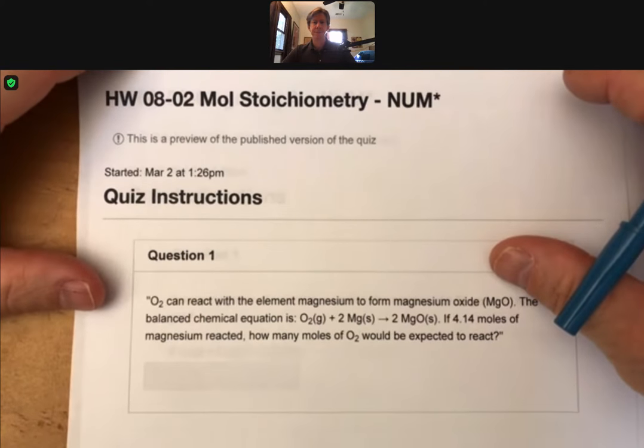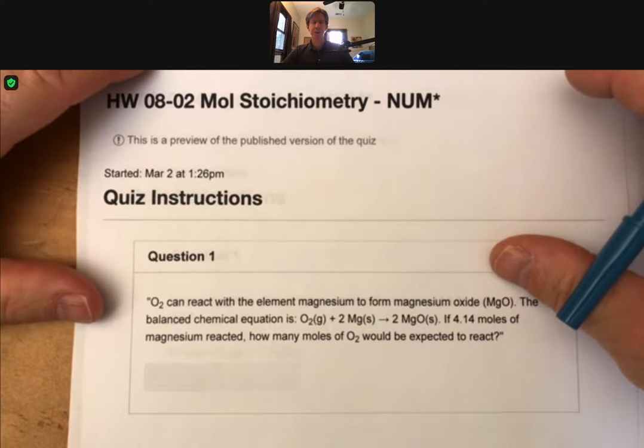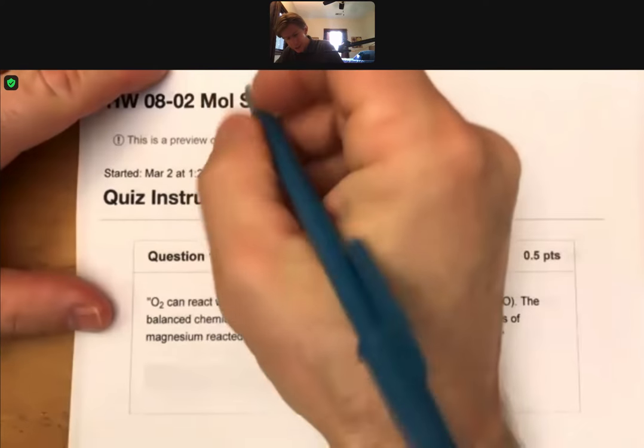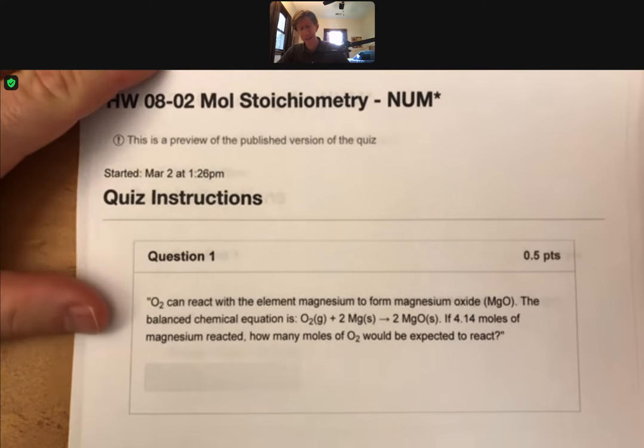This is going to be molecular stoichiometry, where stoichiometry is a word that means basically keeping track of things in a chemical reaction.